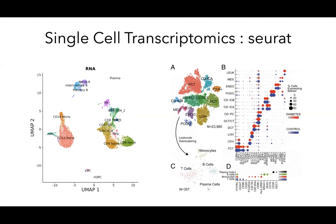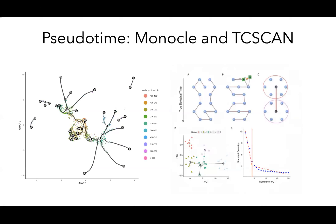We'll discuss three main applications of downstream single cell analysis: clustering by cell type using marker genes, differential expression between cell types or cell states, and pseudotime trajectories — the idea that cells differentiate over time from undifferentiated to differentiated states. One important package we'll cover is the Seurat package, which allows denoising, creating objects, looking at clusters using TSNE or UMAP, and identifying marker characteristics. We'll also cover MONOCLE and TCscan, which allow us to look at pseudotime trajectories and interpret clustering data.